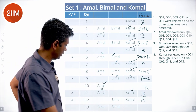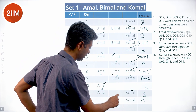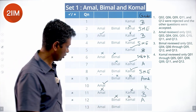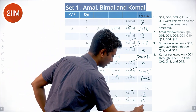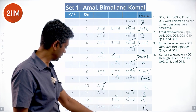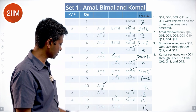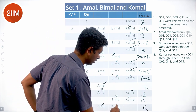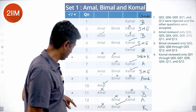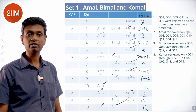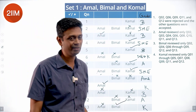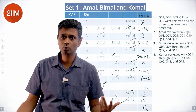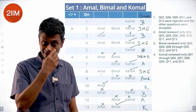Q12 was reviewed by Bimal and Komal, so it must have been created by Amal — rejected by Bimal and also rejected by Komal. Q13 was reviewed by Amal and Bimal, created by Komal; first reviewed by Amal who rejected it, then Bimal accepted it. So with this grid we can figure out who created most of the questions.